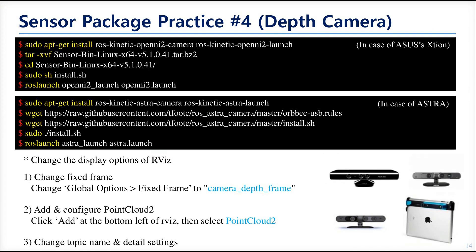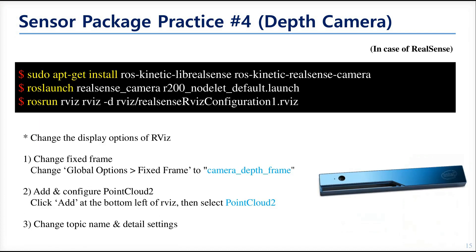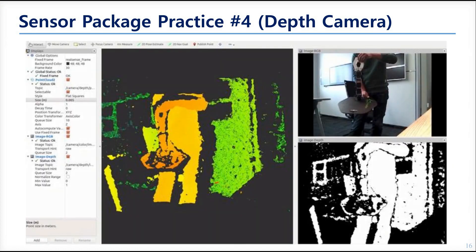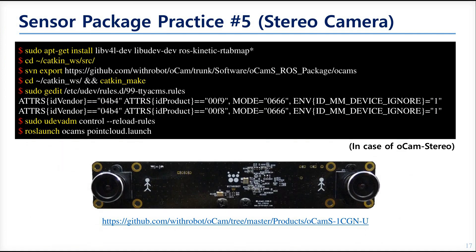The fourth practice uses the depth camera. You can use this if you have an ASUS Xtion or the Orbbec Astra, or a RealSense R200. The following is all you need to run these depth cameras. When you run the depth camera node, you can see the result in your display. This package is also for the stereo camera called OCam — if you have this, you can follow the guide.